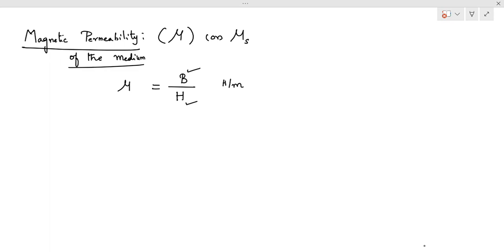So magnetic permeability of the solid or the given material medium can be defined as the ratio between the magnetic flux density and the magnetic field intensity.